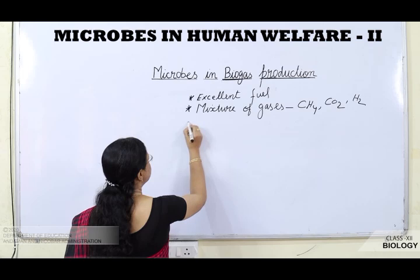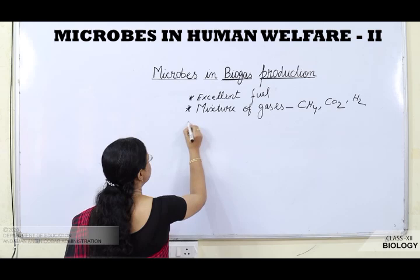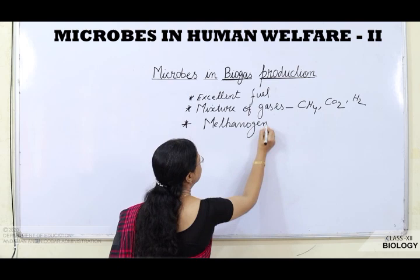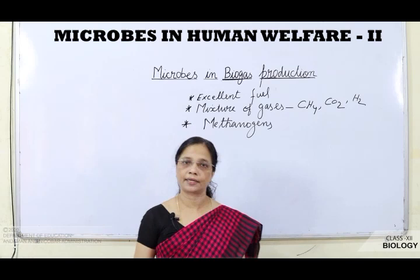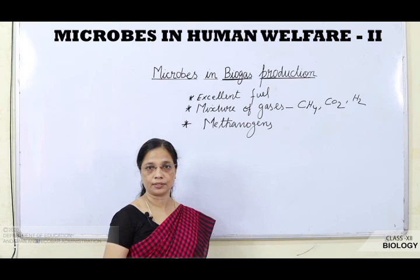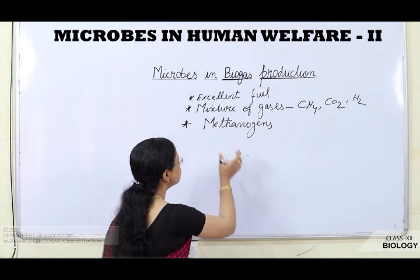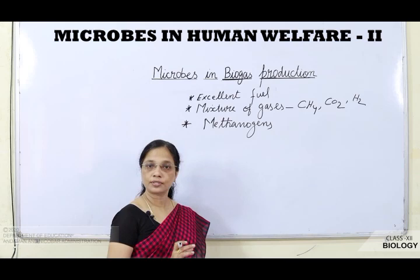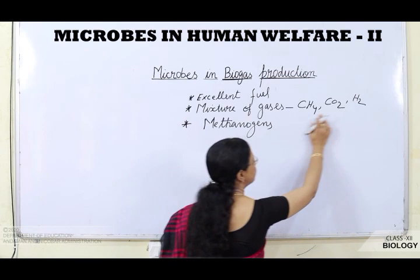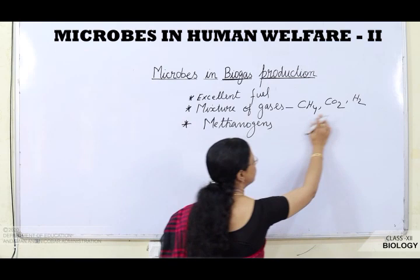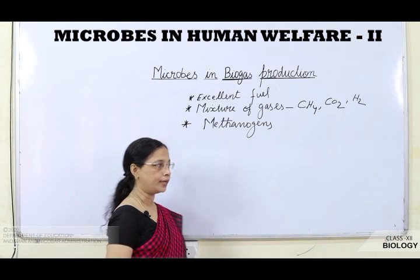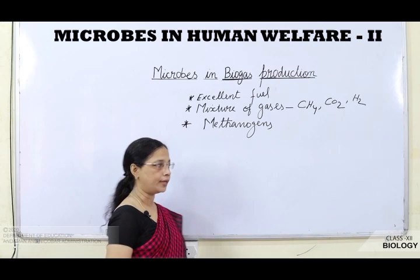Biogas is produced by a group of bacteria known as methanogens. Methanogens are anaerobic bacteria — they do not require oxygen for respiration and grow in anaerobic conditions. These methanogenic bacteria grow on cellulosic material and break down or digest it to release gases: methane, carbon dioxide, and hydrogen.